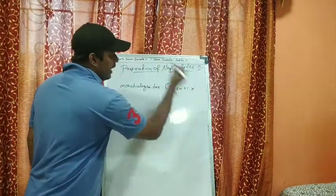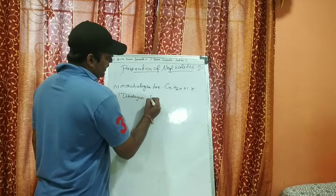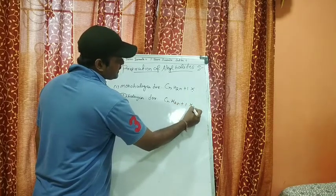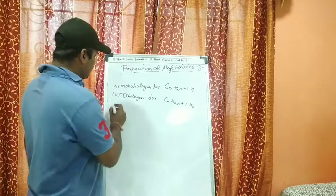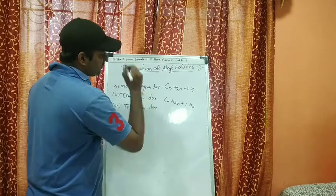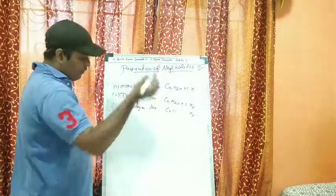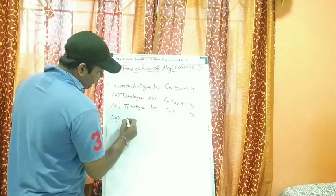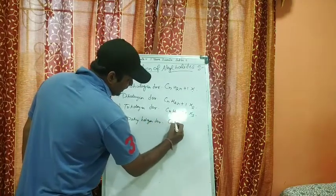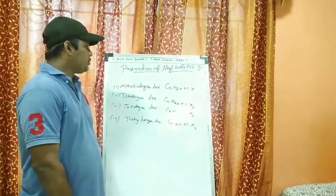For dihalogen derivatives, the formula is CₙH₂ₙ₊₁X₂, containing two halogen atoms. For trihalogen derivatives, it is CₙH₂ₙ₊₁X₃. For polyhalogen derivatives, it is CₙH₂ₙ₊₁X₄. These general molecular formulas of halogen derivatives of alkane can be asked as MCQs in your board exam.